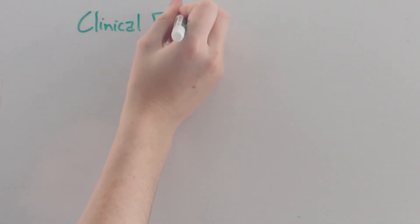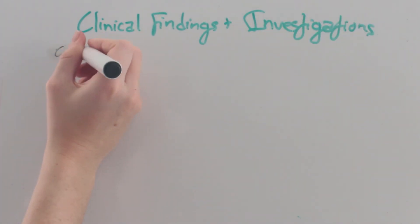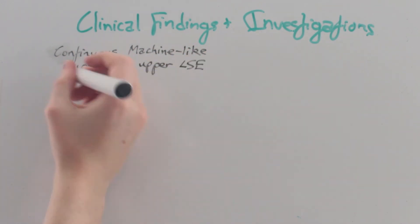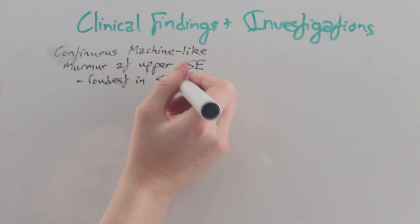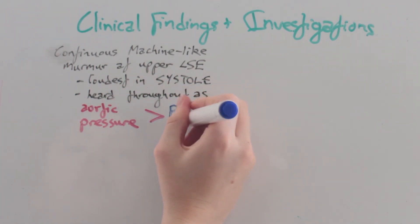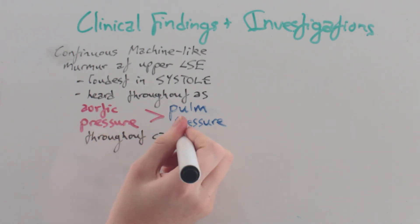Let's look at clinical findings and investigations. There is a continuous machine-like murmur at the upper left sternal edge. This is loudest in systole yet heard throughout diastole as well, as aortic pressure is constantly higher than pulmonary pressure throughout the cardiac cycle.